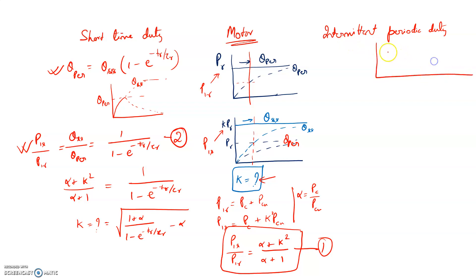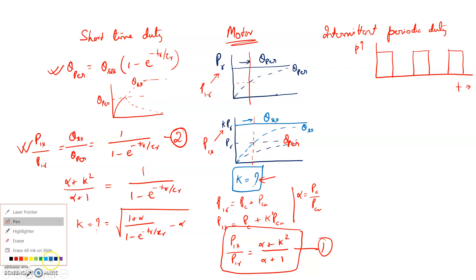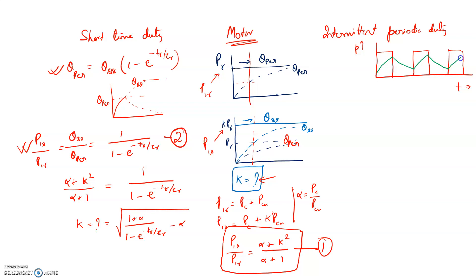Now suppose I want to utilize the motor for intermittent periodic duty — the motor is on for some time, then off, then on again. The rest time and on-time are not long enough to reach steady state. So the temperature will oscillate between two points: θ_min and θ_max, eventually reaching a cyclic steady state.